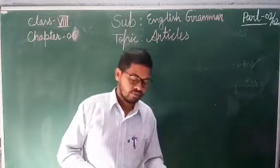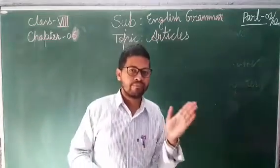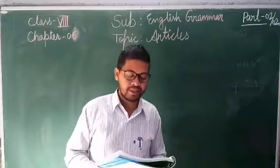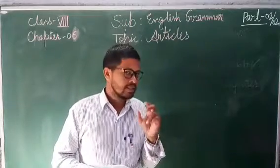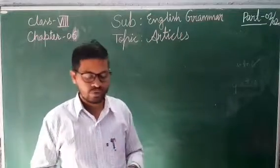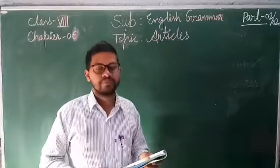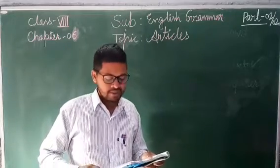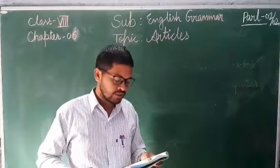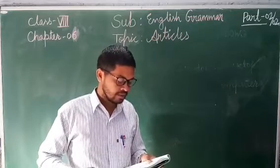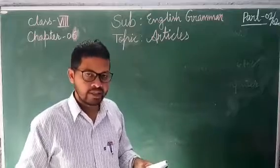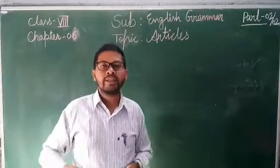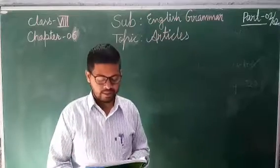We use 'the' with these kinds of place names: oceans and seas — 'the Pacific,' 'the Black Sea'; rivers — 'the Danube'; canals — 'the Panama Canal'; mountain groups — 'the Himalayas,' 'the Alps'; island groups — 'the West Indies'; and deserts — 'the Sahara Desert.' In all these cases, you must use the definite article 'the.'